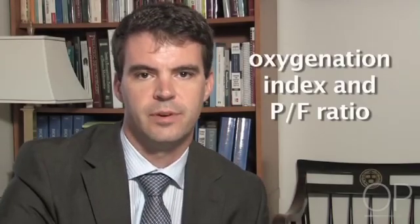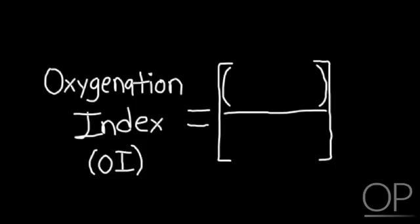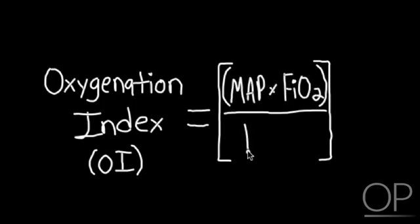Let's talk about oxygenation index and PF ratio. Both are important indices useful to calculate because they delineate if a patient is getting sicker or better. The oxygenation index is calculated by the mean airway pressure times the FiO2 divided by the PaO2, multiplied by 100. If the oxygenation index is rising, it means the patient is getting worse — the patient needs more mean airway pressure or a higher FiO2 to achieve the same PaO2.